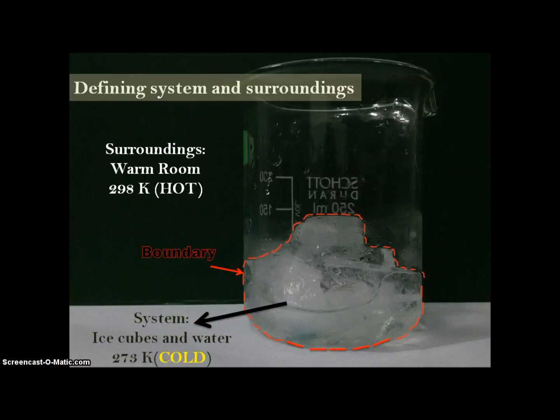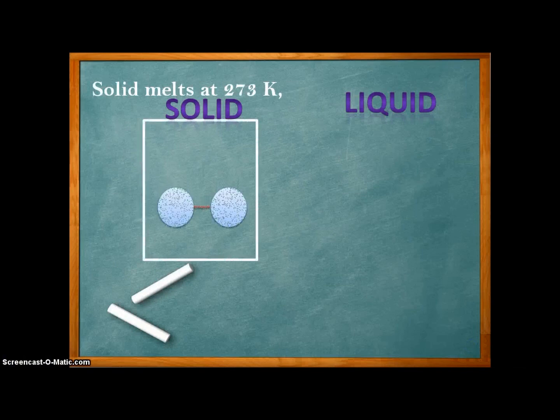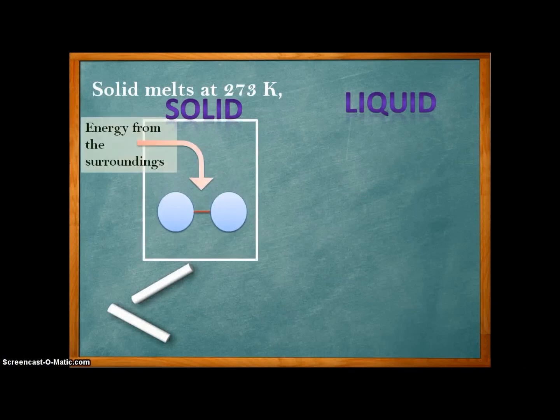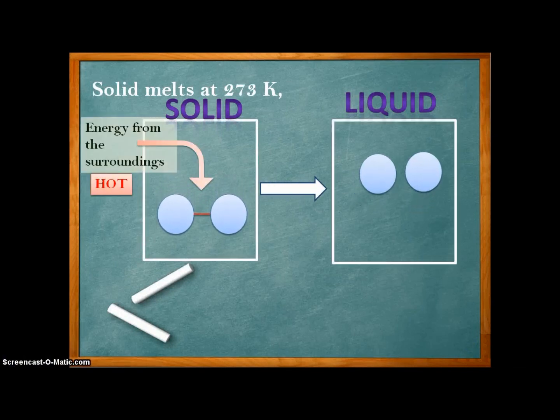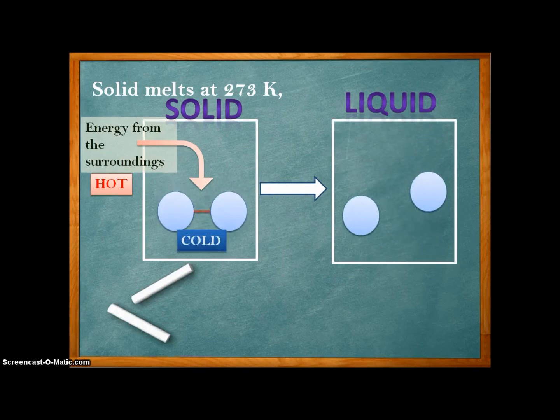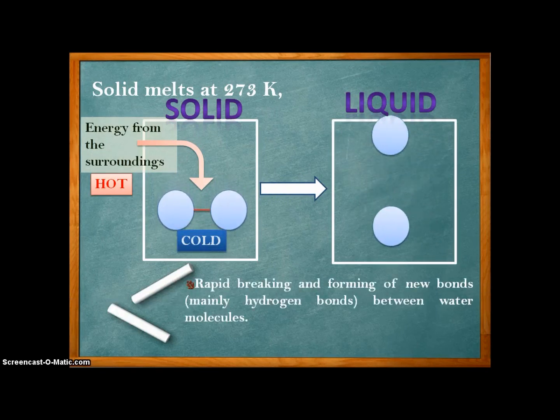The system is the cold glass of ice and water while the surroundings is the warm room. Energy flows from the surroundings into the system, that is from hot to cold. Rapid breaking and forming of new bonds, mainly hydrogen bonds, happen in the system.